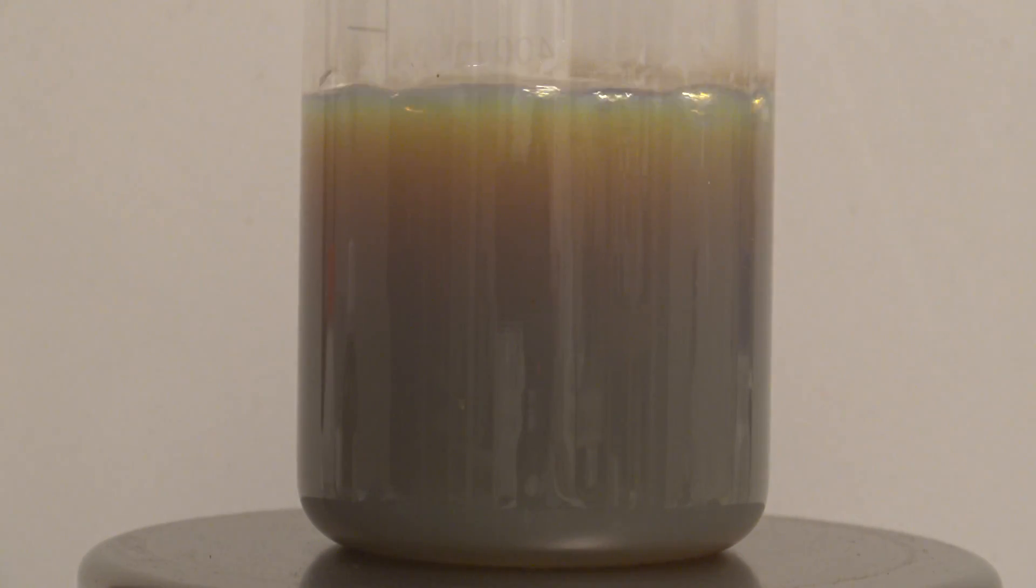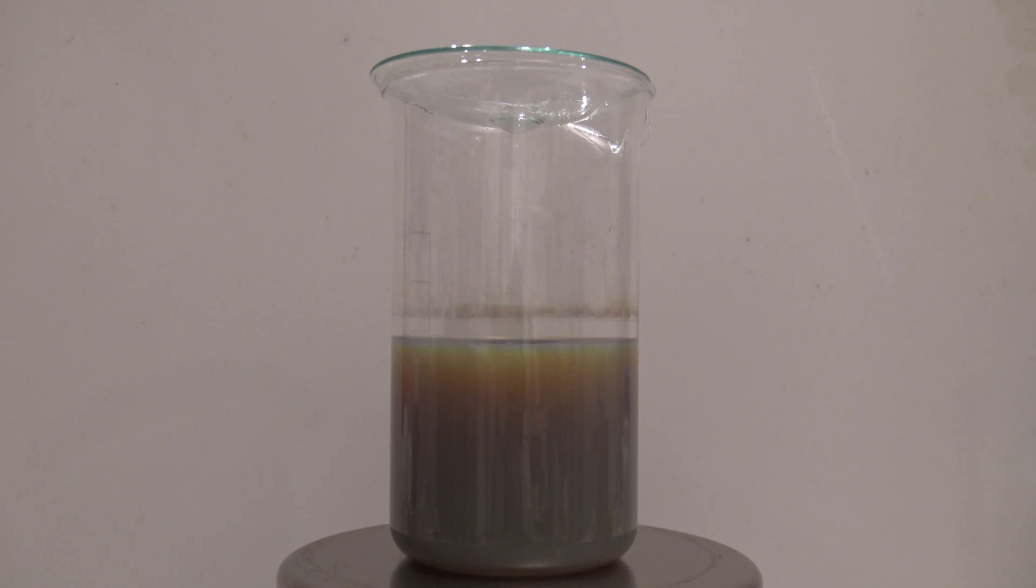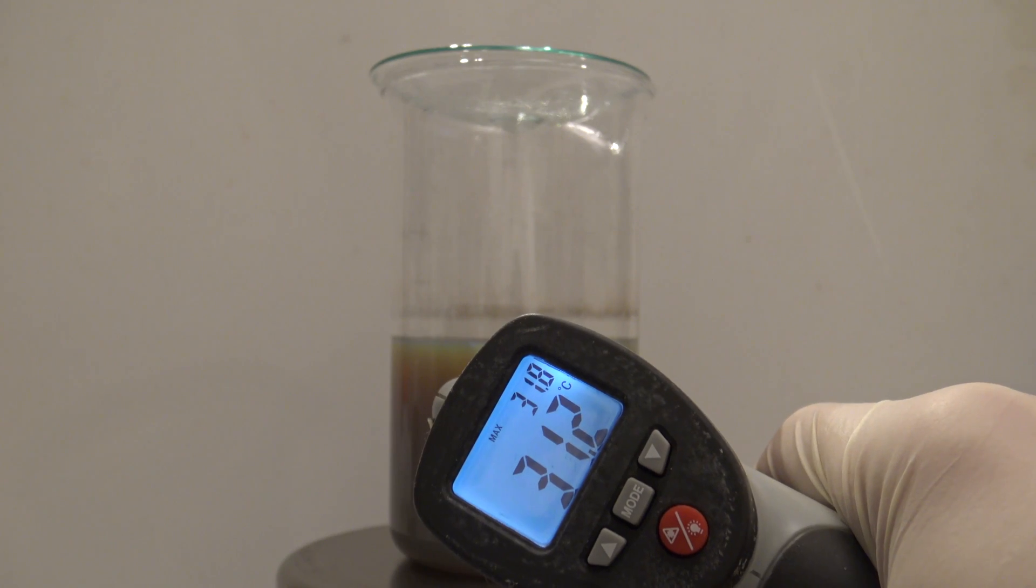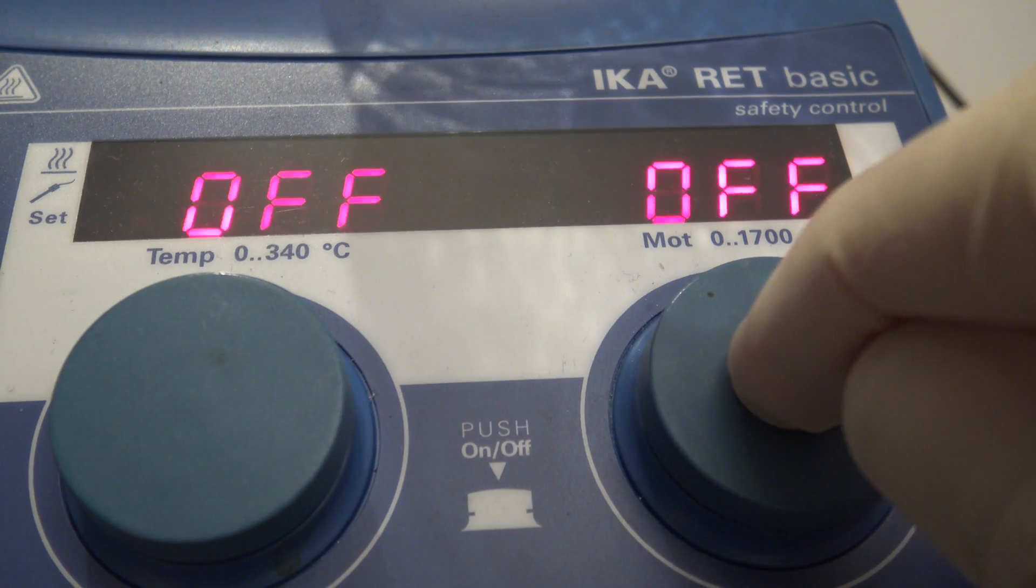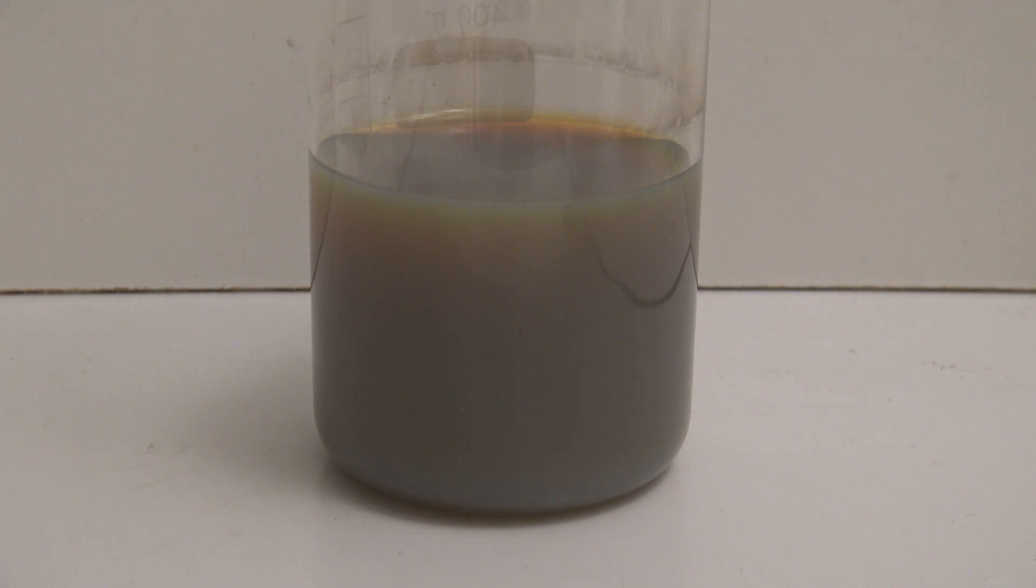The size of the particles depends on the concentrations, the temperature, and the time of heating. After 33 minutes the hot plate was turned off and it was left stirring until the temperature was at around 30 degrees Celsius. Then it was left to sit without stirring until it had reached room temperature.